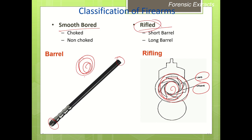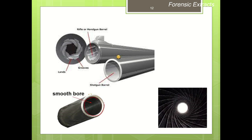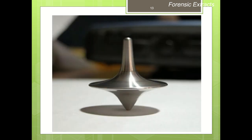In a smooth bore firearm, because of the wide muzzle end, there are chances of fanning out of the shot. To decrease this fanning out, terminal narrowing is seen in shotguns, known as chocking. This is the smooth bore firearm — the surface inside the barrel is very smooth. In a rifle barrel, there are prominent areas called lands and depressed areas called grooves, with spiraling lands and grooves visible inside the barrel.